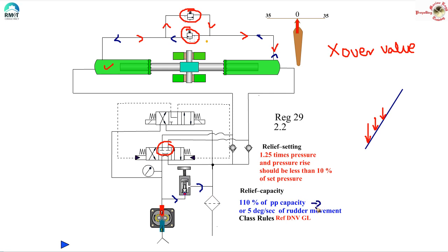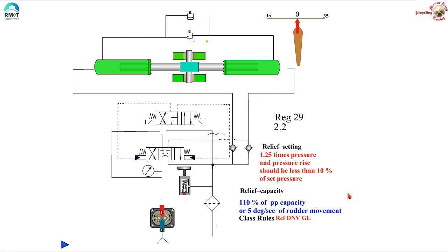The capacity of this relief valve should be 110% of the capacity of the pump — this figure comes from DNV class rules, not directly from SOLAS. SOLAS mentions 1.25 times the pressure setting and stops there, whereas figures like 10% accumulation and 110% pump capacity originate from class guidelines. There is another way to quantify the required capacity: the relief valve should also cater to 5 degrees per second of rudder movement.